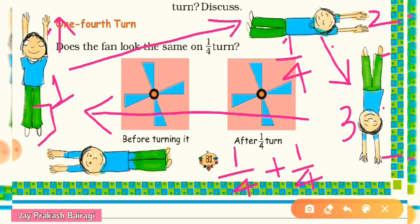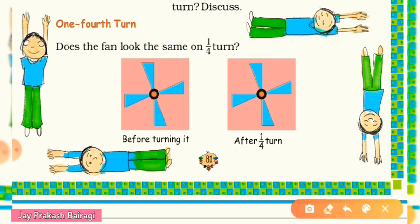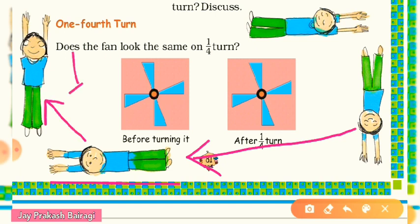What will happen if this position goes through another one fourth turn? You will get another sleeping position on the right side. And in another one fourth turn, you will come back to your original position — picture one. I hope you have understood one fourth turn through this activity.